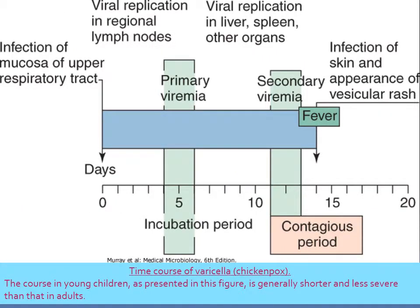If you were to look at the viral replication timeline, you can see the whole time course. You want to know: is this virus contagious, and if yes, for how long and when? You can see there is a primary viremia and a secondary viremia. You only become contagious during the secondary viremia — that's where you see the skin disease. The moment you see skin disease, ulcers, or vesicular rash, that is when you become contagious. This is a classical example for chicken pox.